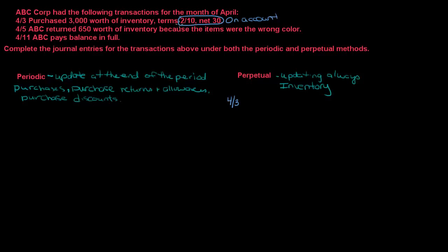2/10 net 30 means that if ABC pays within 10 days they'll get a 2% discount — so if they pay by April 13th. Otherwise, if they pay by May 3rd (net 30), no discount. And typically if you go beyond the 30 days, they probably have to pay some sort of finance charge or interest because they paid late. So on April 3rd, they purchased $3,000 worth of inventory, terms 2/10 net 30.